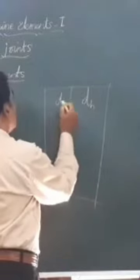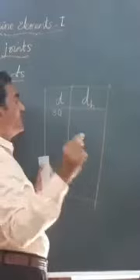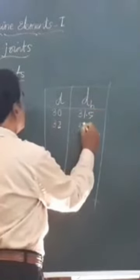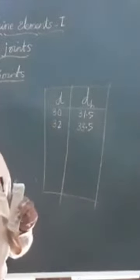a diameter of rivet equal to 30 mm, the diameter of the hole to be drilled in the plate is 31.5. Suppose this is 32, maybe this is 33.5, and so on. The diameter of the hole DH will be slightly greater.